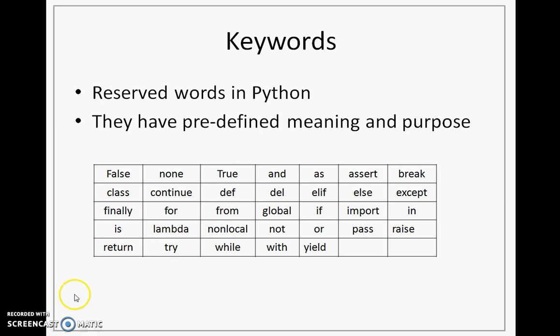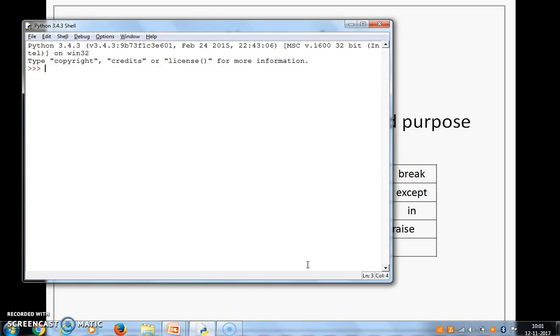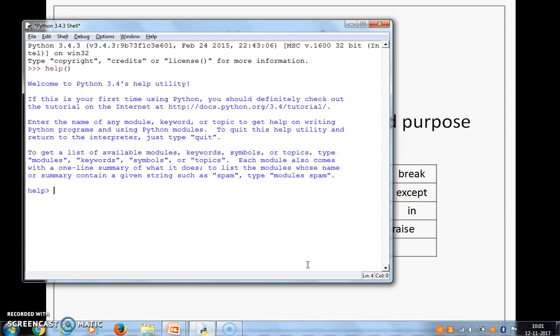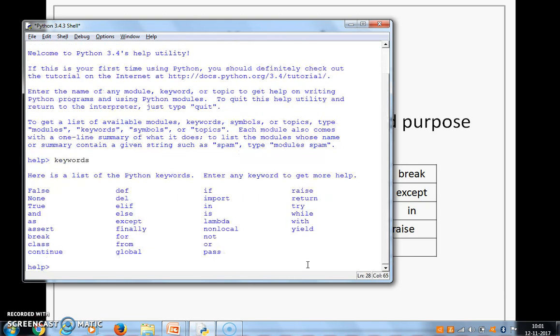In this table here, you see a list of keywords that are available. This is not an exhaustive list, and if for your Python installation you want to know what keywords are available, then you can go to Python shell and take help. Once the help prompt comes, you can type in keywords, and you will get the list of keywords that are available on your Python installation.